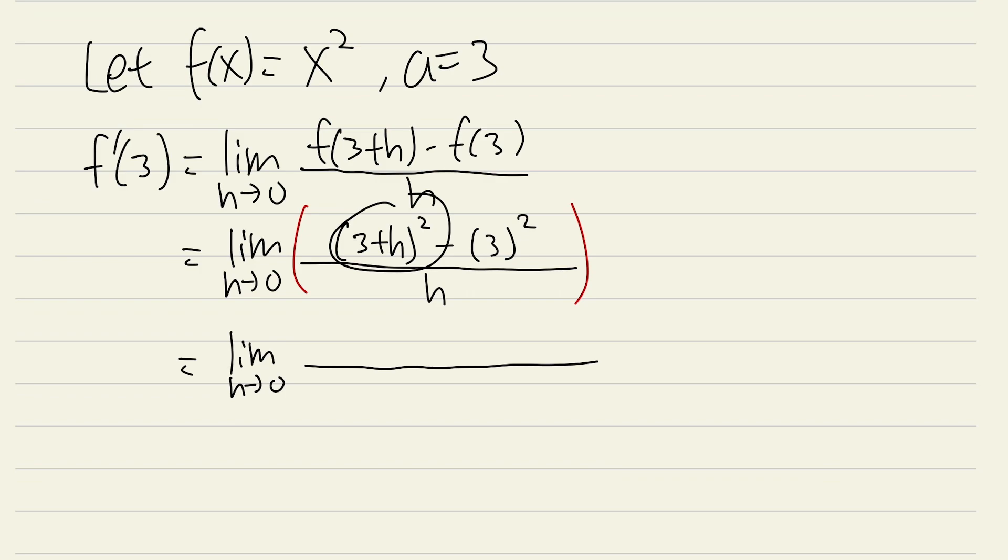This will be the limit as h approaching 0. Expand this, 3 plus h squared, you square the 3 first, you get 9, plus 2 times 3 and h, you get 6h, lastly, you add the h squared, and then minus 3 squared, which is 9, over h. On the top, you see 9 and 9 cancel, very nice. Better yet, if you look at this and that, we can factor out an h. This is the limit as h approaching 0 of h times 6 plus h over h. Now we can be happy because we can cancel this h.